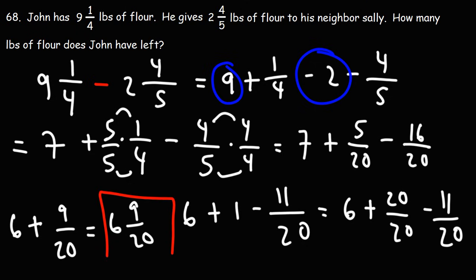So that's how much flour John will have left after giving some to his neighbor Sally. So that's the answer, six and nine-twentieths.